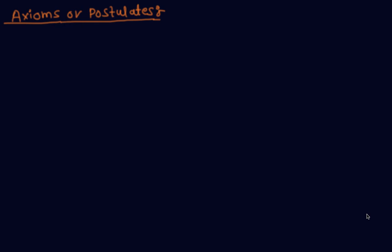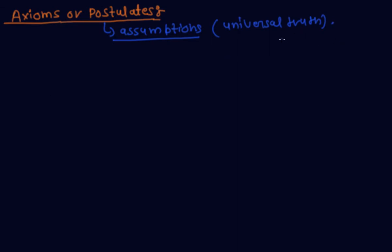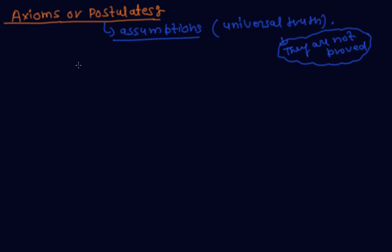Hi friends, today I discuss axioms or postulates. The axioms or postulates are assumptions which are obviously universal truths. They are not proved. An axiom is a statement which is accepted to be true without proof.